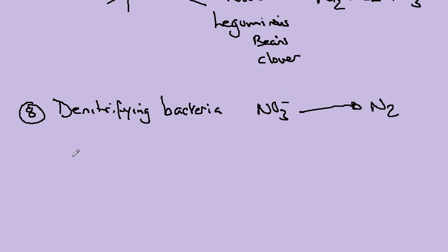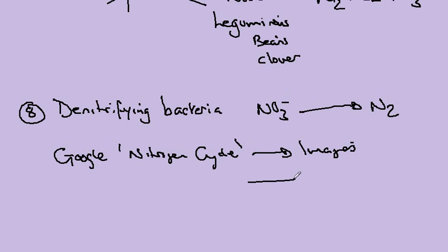As before, what we need to do now to consolidate this work is Google nitrogen cycle. Go to the images. And you need to go through two or three different diagrams of the nitrogen cycle, identifying the stages that I've shown you above. And it's this reinforcement which will develop your understanding and prepare you for the diagram that you need to interpret in your examination.